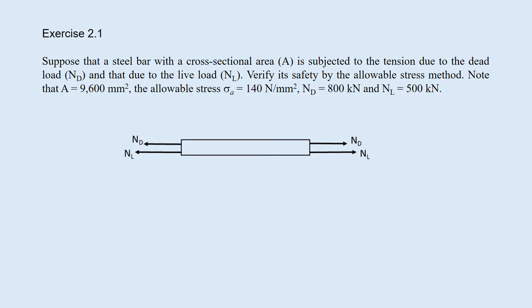Exercise 2.1. Suppose that a steel bar with a cross-sectional area A is subjected to the tension due to the dead load, Nd, and that due to the live load, Nl. Verify its safety by the allowable stress method. Note that A equals 9600 square millimeters. The allowable stress, sigma A equals 140 newton per square millimeters, Nd equals 800 and Nl equals 500 kilonewton.